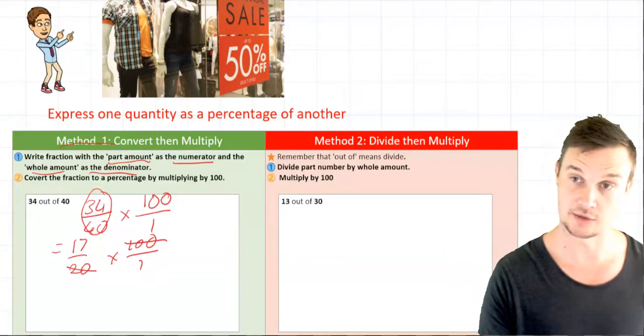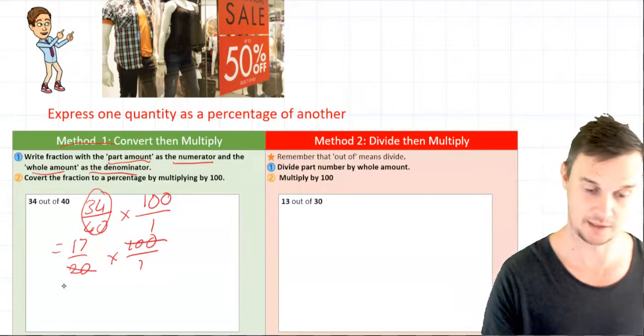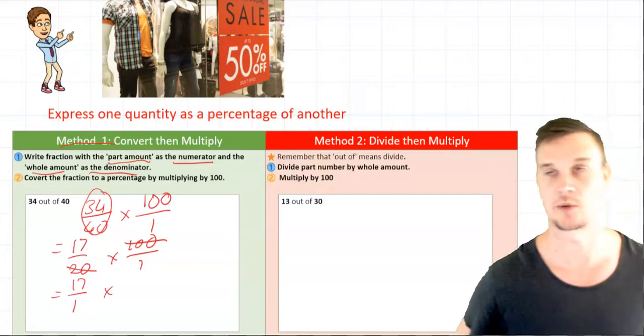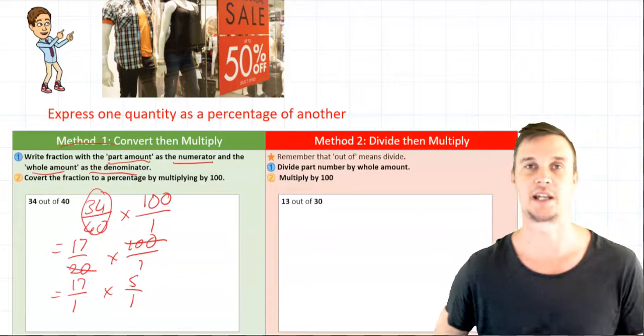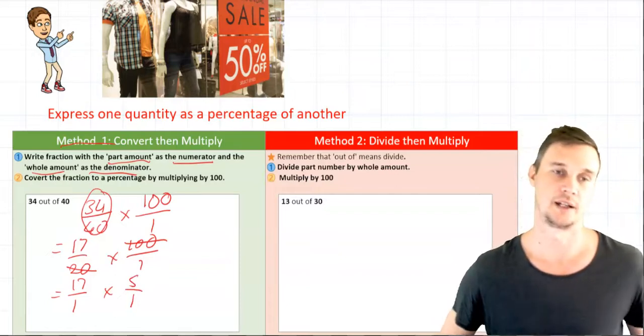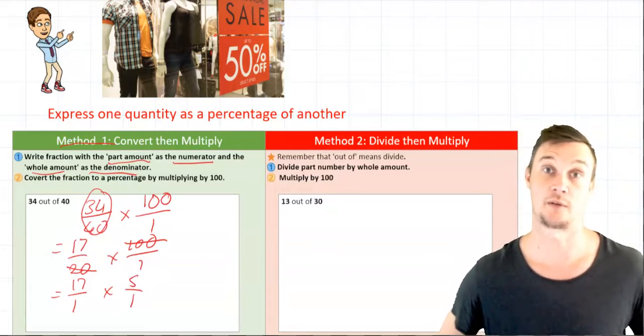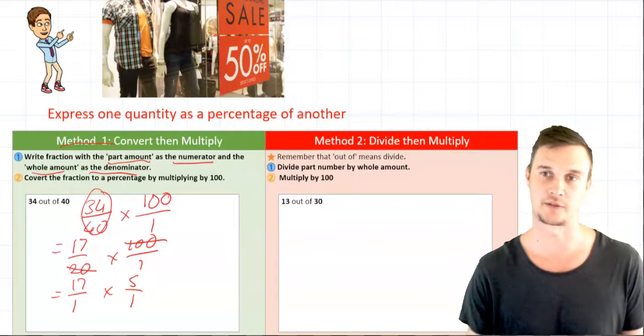So how many times does 20 go into 20? Obviously 1. So now I have 17 over 1 and how many times does 20 go into 100? We know that is 5 times. So now I have 17 times 5, sorry 17 over 1 multiplied by 5 by 1 and this is now an easy fraction for us to do.